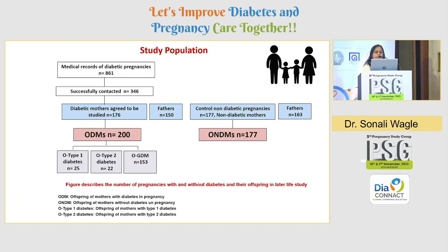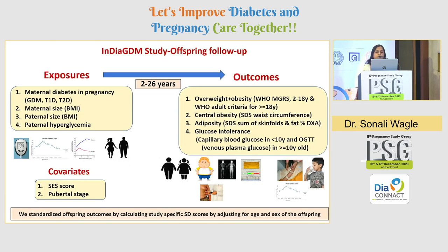Our study population consisted of 177 mothers and their 200 ODMs (offspring of diabetic mothers), and 177 controls — non-diabetic pregnancies and their 177 offspring (ONDMs). A major strength is that we also studied fathers: 150 fathers in the ODM group and 163 in the ONDM group. Our main exposures were maternal diabetes in pregnancy — including GDM, Type 1, and Type 2 — as well as maternal size, paternal size, and paternal hyperglycemia.